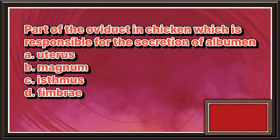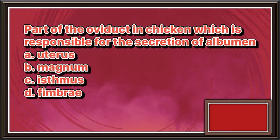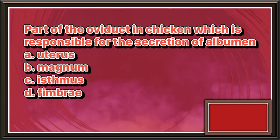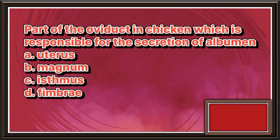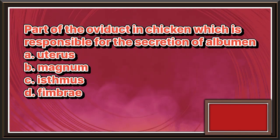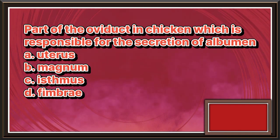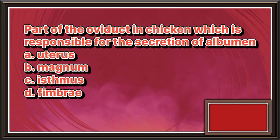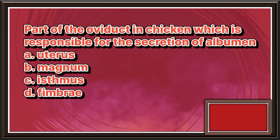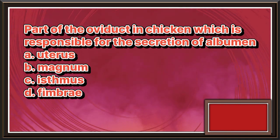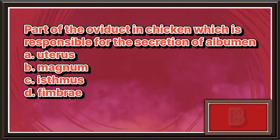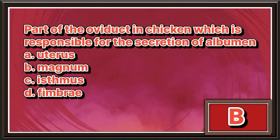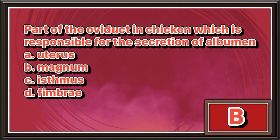Part of the oviduct in chicken which is responsible for the secretion of albumin. A. Uterus. B. Magnum. C. Isthmus. D. Fimbriae. The answer is letter B.